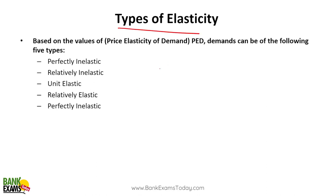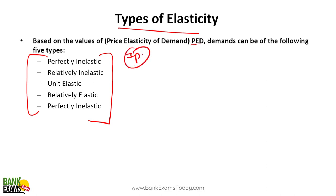Based on the values of the price elasticity of demand, the demand can be of five types. This is a very important topic for the exam. The examiner may ask you what kind of demand milk has, or what kind of demand petrol has if the demand doesn't change. The five types are: perfectly inelastic, relatively inelastic, unit elastic, relatively elastic, and perfectly elastic.